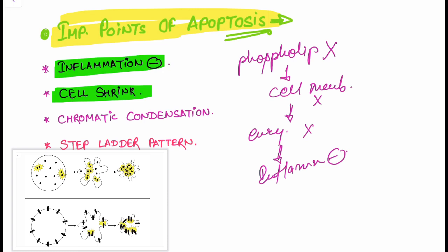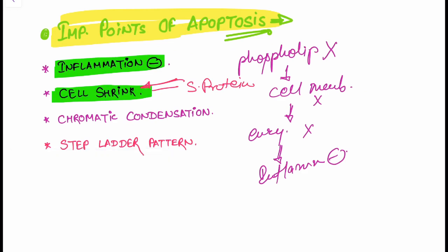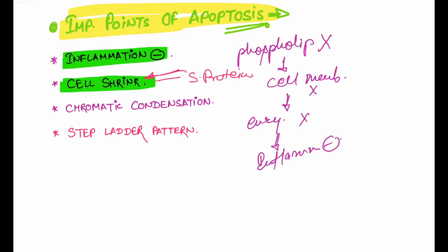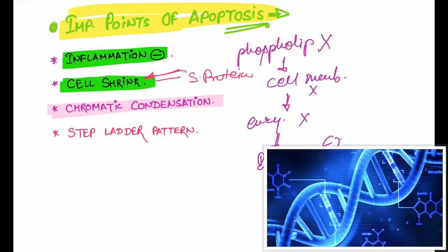The second point is cell shrinkage. Cell shrinkage is due to protease activation, which causes destruction of structural proteins, leading to cell shrinkage.